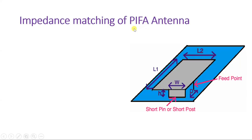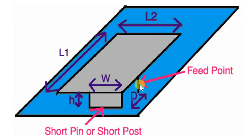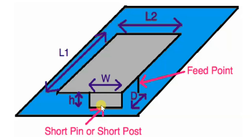For impedance matching of PIFA antenna, what we do is displace the pin position. Right now the pin is at one location; I can move it, and as I move this pin, its impedance changes. Whatever impedance is there with the transmission line should get matched to this antenna so we can deliver maximum power. This is the basic phenomenon required — if exact impedance matching is achieved, we can deliver maximum power.